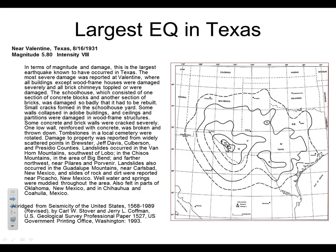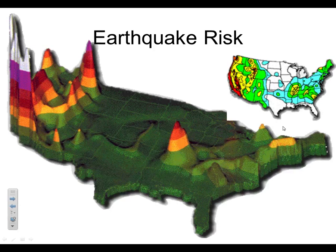What about the largest earthquake in Texas? We do have them in Texas. The largest was only a 5.8, but 5.8 is pretty significant — it crumbled a lot of buildings in 1931. That was in Valentine, Texas, down in the corner by Big Bend National Park. Dallas is way up north, so you would have felt it there at a Mercalli Scale 2 or 3. We'll look at that scale soon and do an activity with it. So we do have earthquakes in Texas.